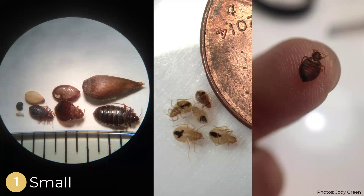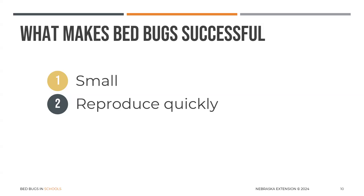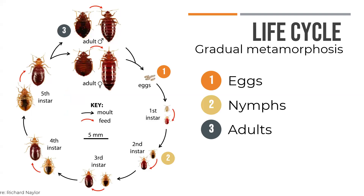You can see bed bugs at different stages and whether they're fed or not — even next to a penny. They are small and can be transparent, and sometimes you can see what's in their guts, which is typically blood. As an adult, they're about a quarter of an inch when unfed, and when fed they get elongated and a little larger. They also reproduce quite quickly, so sometimes you may have more bed bugs than you thought.